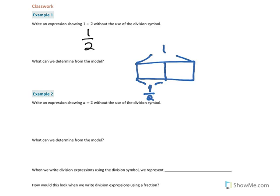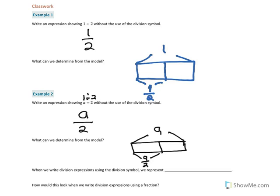Moving on to example 2: write an expression showing a divided by 2 without the use of a division symbol. We could take the a and substitute it for the number 1, and it looks just like the one above. Our model would be a — this whole thing is a — we divide it by 2, and what we have for each piece is a over 2.